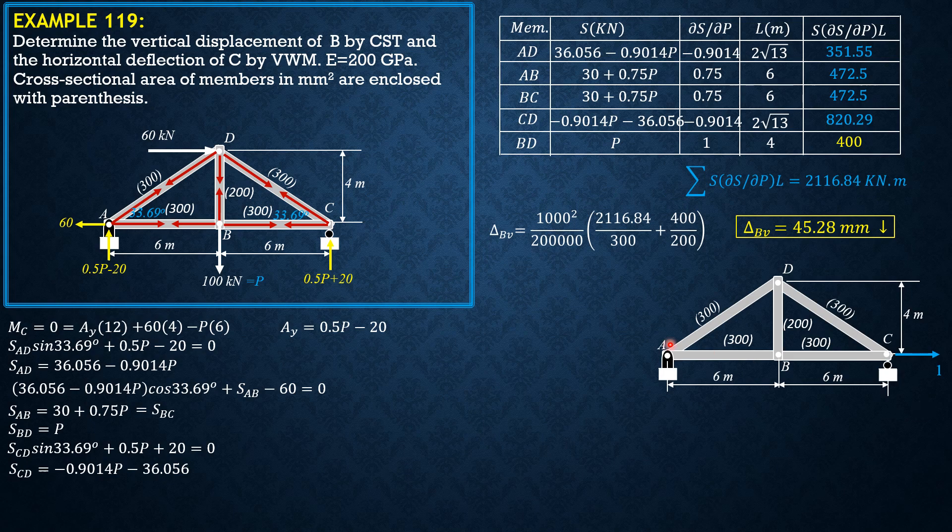If we sum up moment about A, reaction at C would be 0. Vertical reaction at A would also be 0. Therefore because the vertical reaction is 0, then AD is 0, BD is 0, and CD is also 0 because there is no vertical reaction at C due to this unit virtual load at C, horizontal virtual load at C.